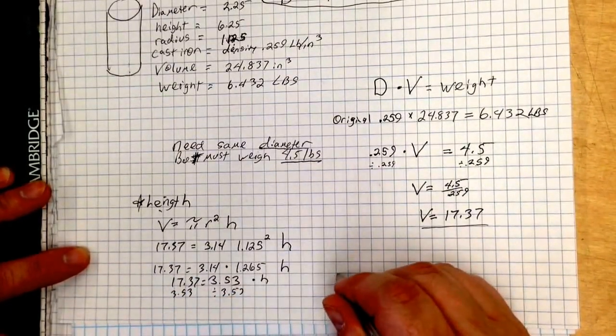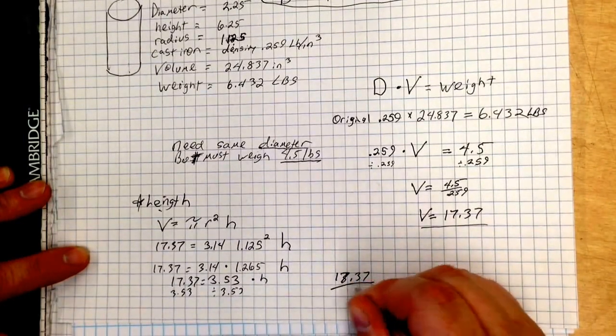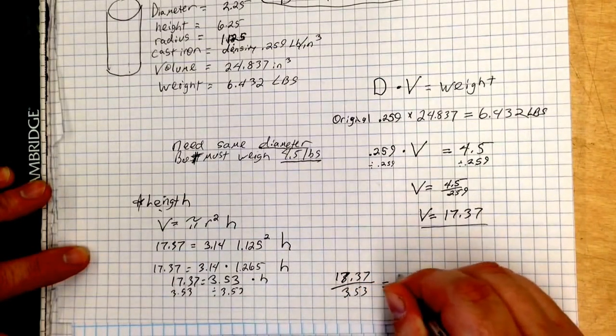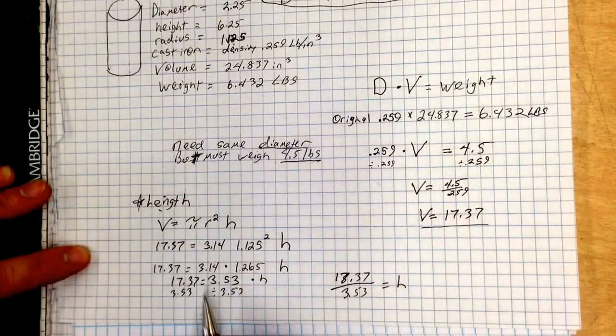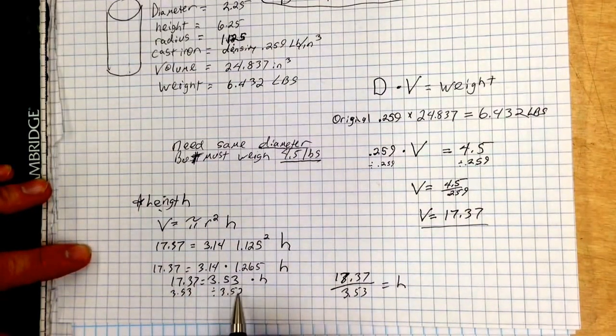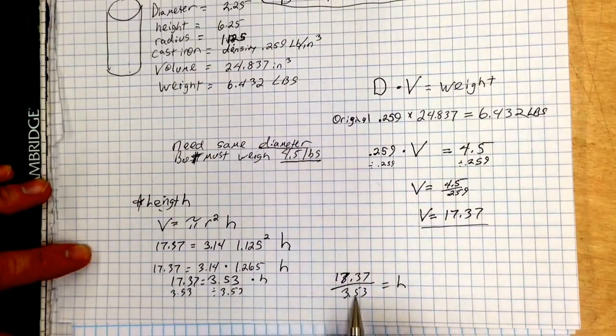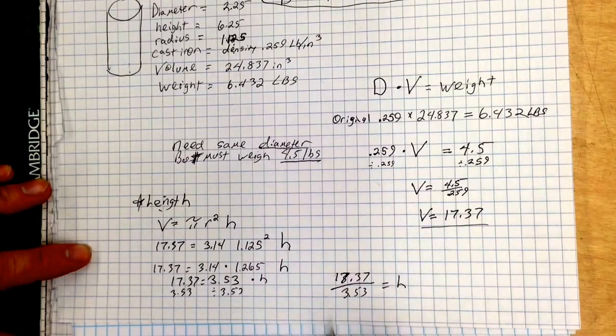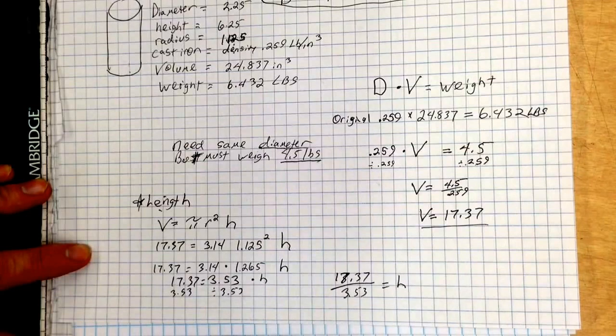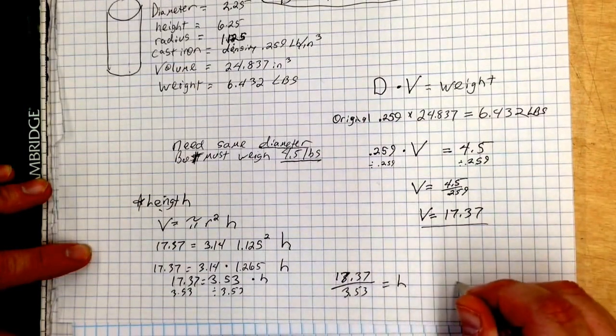Let me write this over here. 17.37 divided by 3.53 equals h. So, nothing has actually changed. It's 17.37 equals 3.53 times h. Divide by 3.53. We've got 17.37 divided by 3.53 equals h. So, 17.37 divided by 3.53 is 4.92.